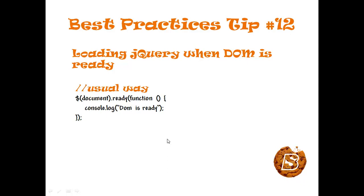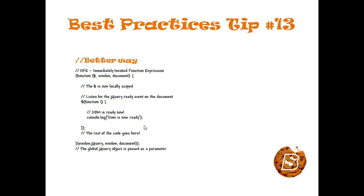Tip number twelve: best practices for jQuery. We usually write a certain syntax when the DOM is ready — you can notice a function and brackets with curly braces. A better approach is an Immediately Invoked Function Expression (IIFE), which starts with parentheses, then 'function', taking three parameters: the shorthand notation for jQuery (dollar sign), the window object, and the document object. The dollar symbol is then locally scoped, and the global jQuery object, window, and document are passed as arguments.